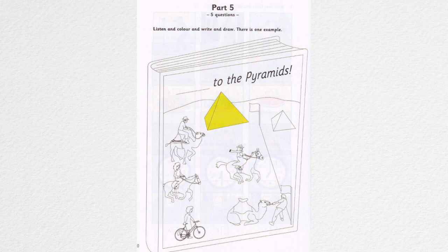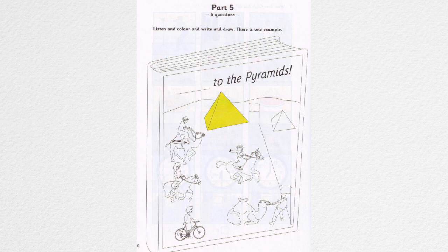Would you like to colour this picture of a book? Yes, please. What's it about? It's about some people who are trying to win some money in a competition. The first person who arrives at the pyramids wins. Can I colour the biggest pyramid? Yes, you can colour it yellow. Can you see the yellow pyramid? This is an example. Now you listen and colour and write and draw.